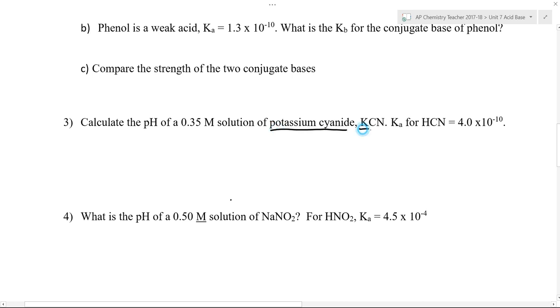When you see a problem like this, you want to recognize that you are actually dealing with an ionic compound. It's going to ionize, so 0.35 molar KCN means we really have 0.35 molar potassium ions and 0.35 molar cyanide ions.